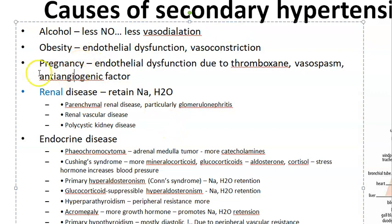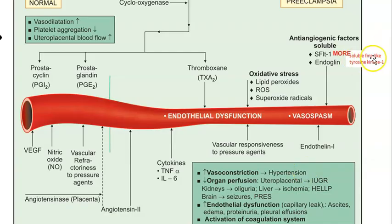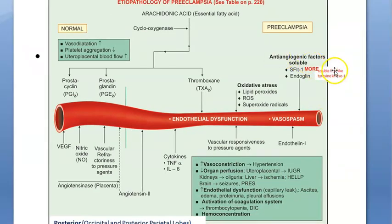In pregnancy, as seen in pre-eclampsia, there is again endothelial dysfunction due to thromboxane and anti-angiogenic factors like soluble FMS-like tyrosine kinase-1 (sFlt-1). If sFlt-1 is elevated there will be vasospasm, and vasospasm means vasoconstriction, which causes hypertension.